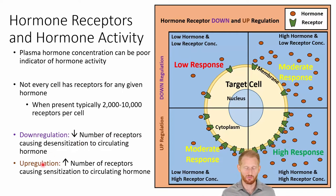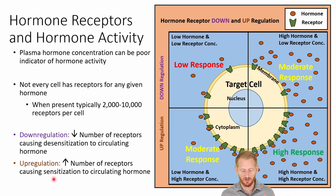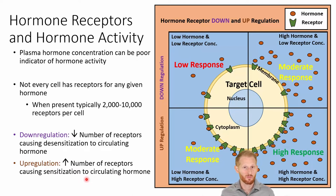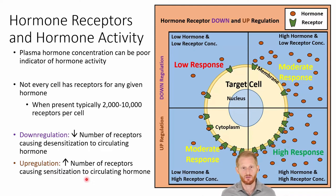We can also up-regulate our receptor number, which means increasing the receptors on a cell, causing an increased sensitization of that cell to the hormone. This typically happens when there is a small amount of hormone present but the cells need that hormone — they will increase the number of hormone receptors they have.